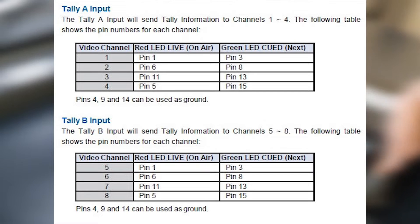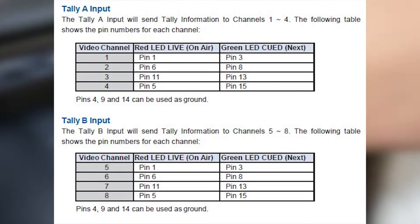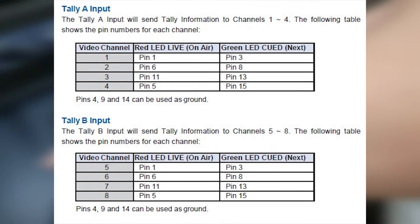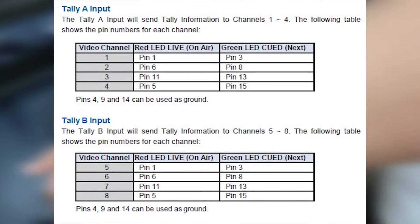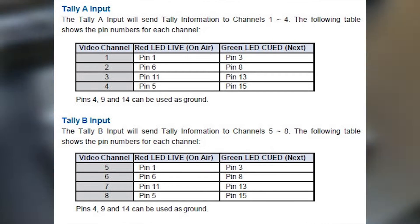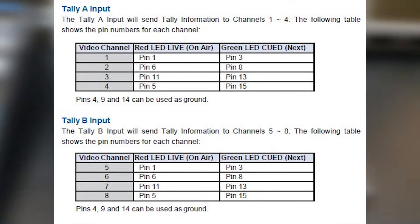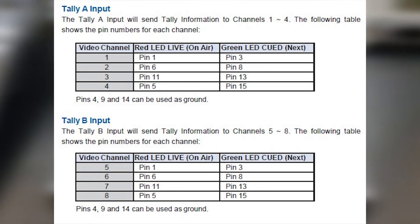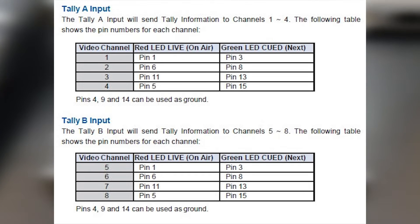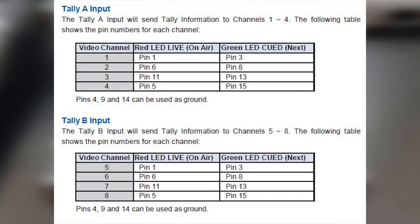The Tally B input will send Tally information to channels 5 to 8. Pins 4, 9, and 14 can be used as ground.